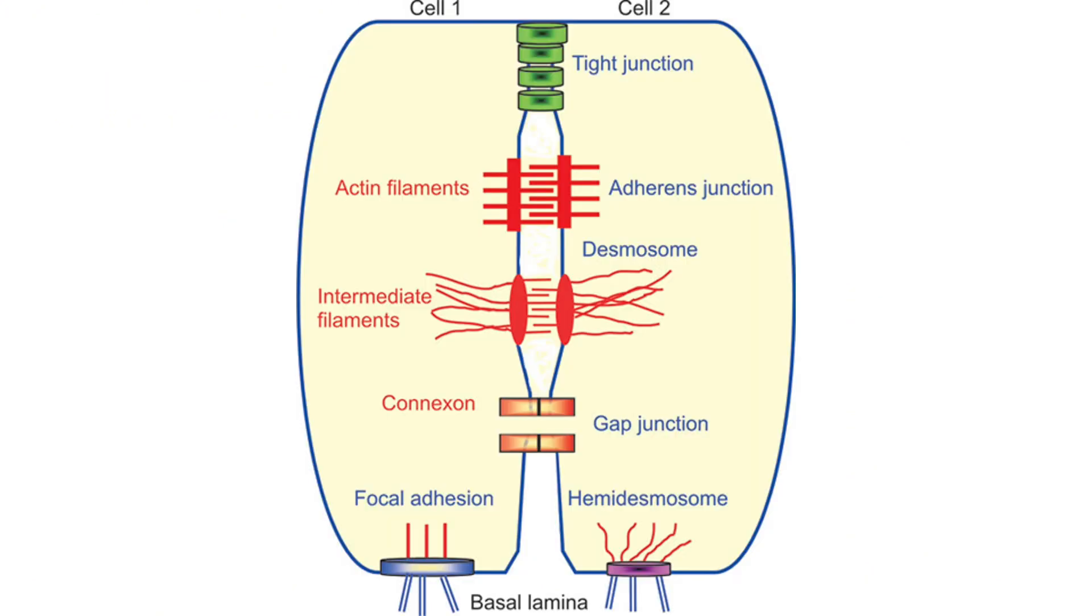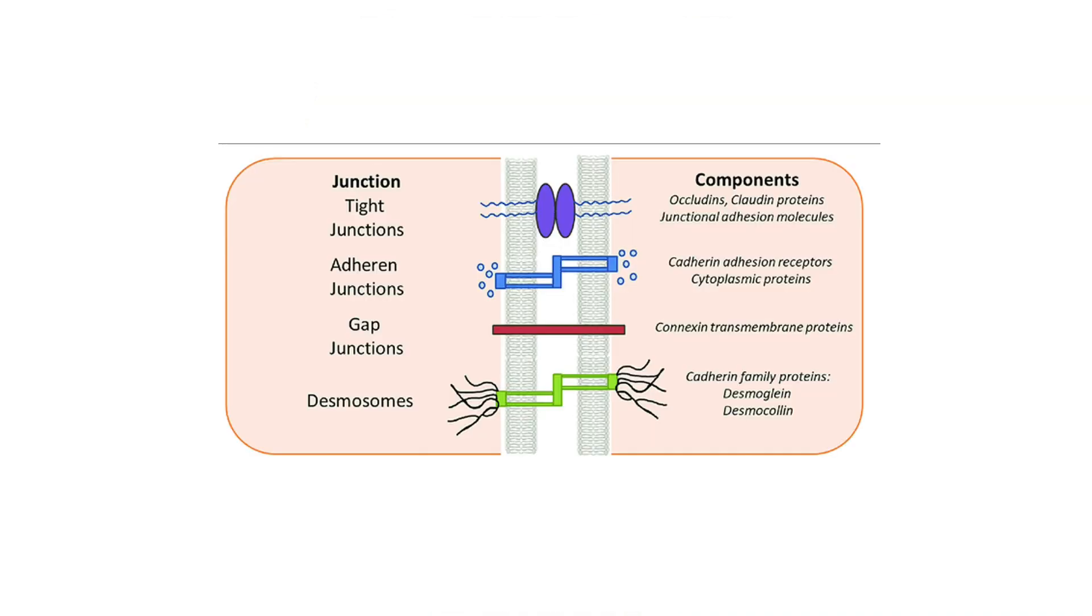So you have tight junctions, which are also occluding junctions. You also have adherent junctions, desmosomes, gap junctions, and hemidesmosomes. These are the major examples of intercellular junctions we have.